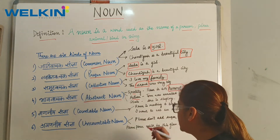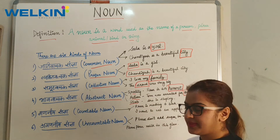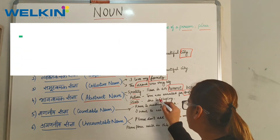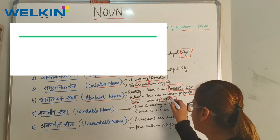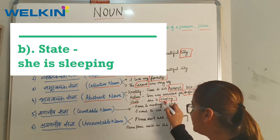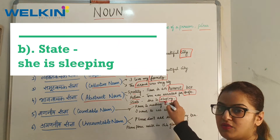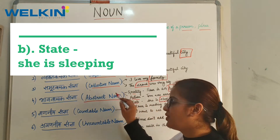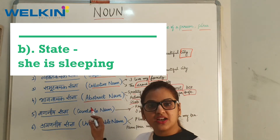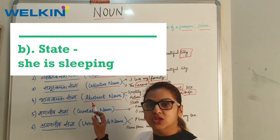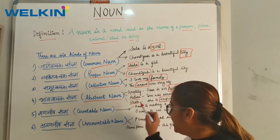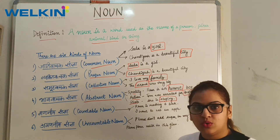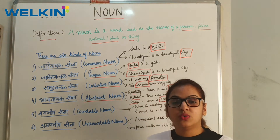Last category of Abstract Noun is State. Example: She is sleeping. 'Sleeping' is a state, so it falls under abstract noun. So I hope these three categories — quality, action, and state — are clear to you in the context of abstract noun.